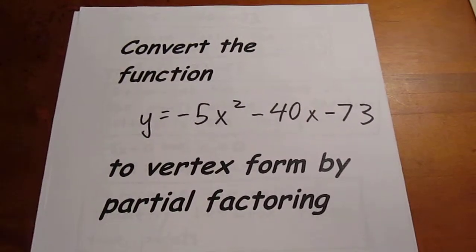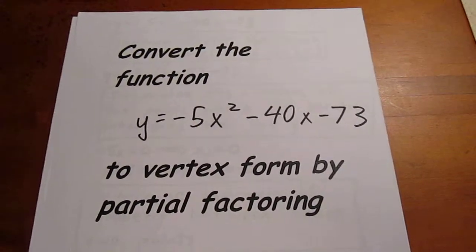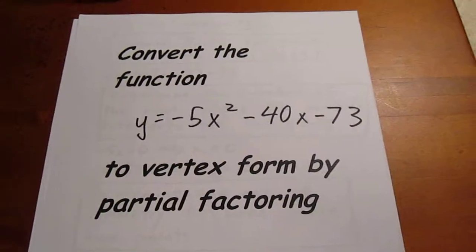We're going to convert the function y equals negative 5x squared minus 40x minus 73 to vertex form by partial factoring.